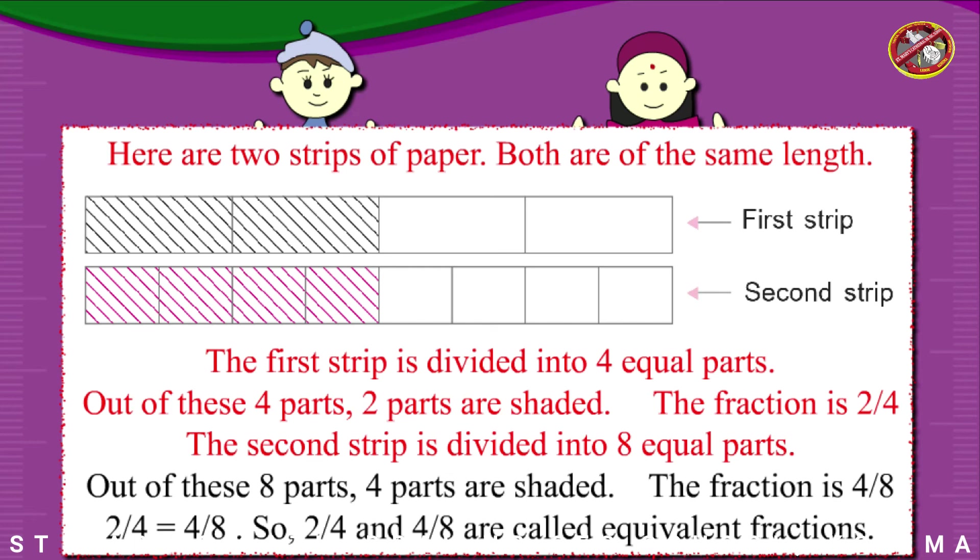The second strip is divided into eight equal parts. Out of these eight parts, four parts are shaded. The fraction is 4/8. Two fourths equals four eighths, so 2/4 and 4/8 are called equivalent fractions.